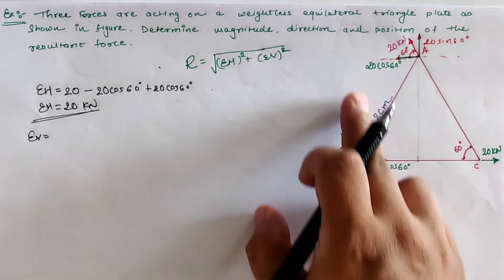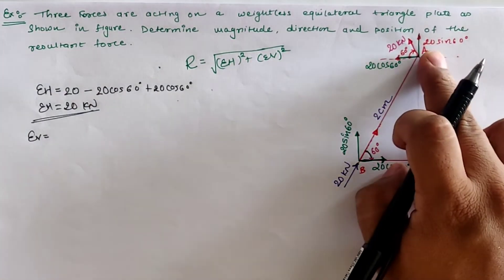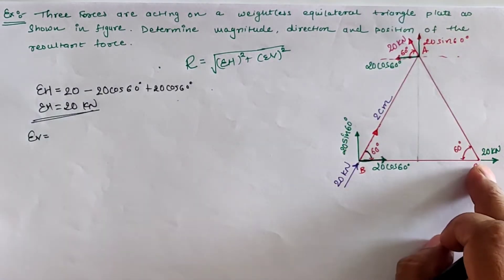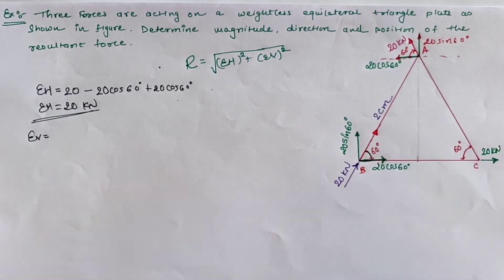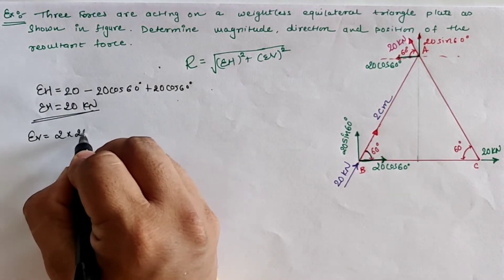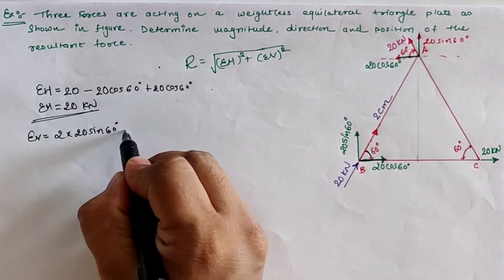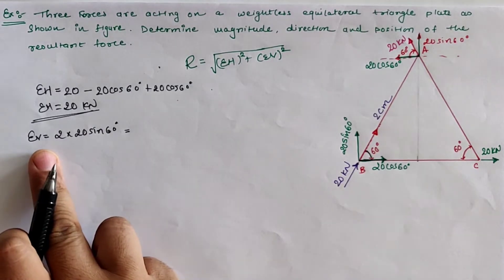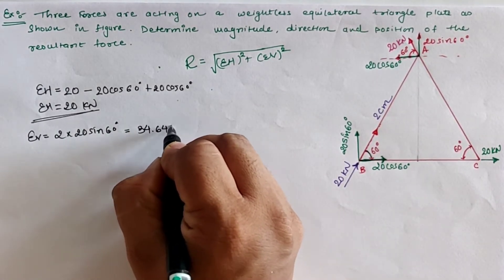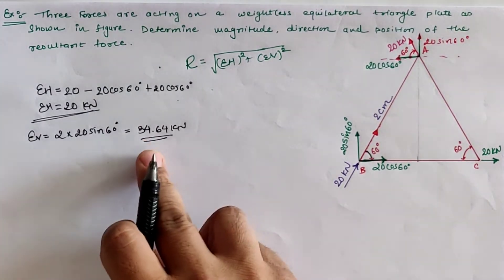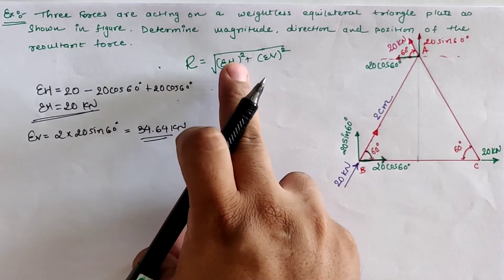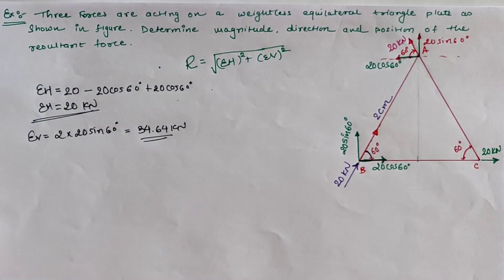For Sigma V, 20 sin 60 is in the upward positive direction at location A, and 20 sin 60 is again in the upward direction at another location. At location C, there is no vertical load. So the total is 2 times 20 sin 60, and the value of Sigma V is 34.64 kN.